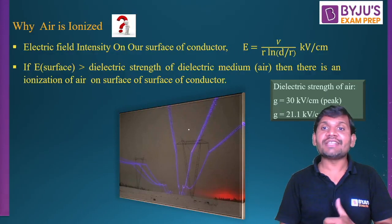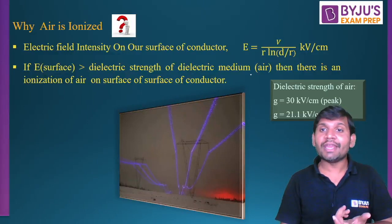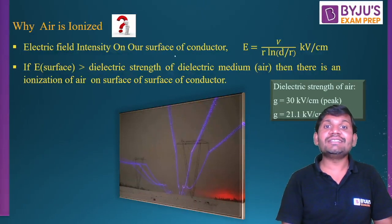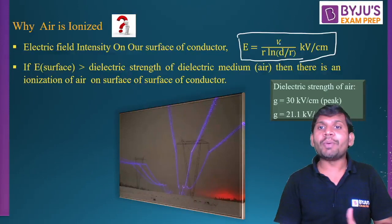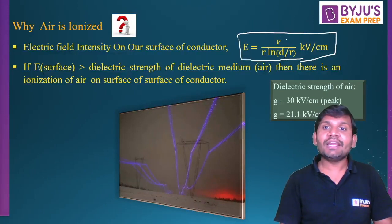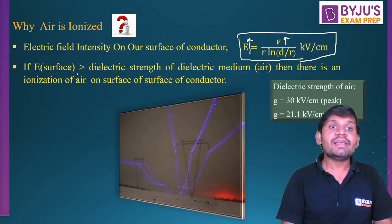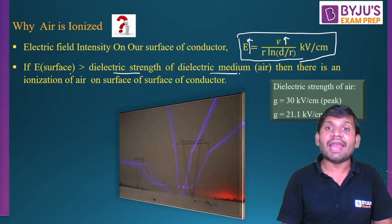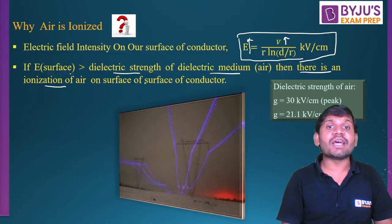Why does ionization of air take place around the conductor? If the lines are operating at high voltages greater than 220 kV, the corona effect is appreciable; for less than 220 kV, it is not appreciable. The electric field intensity on the surface of the conductor is given by a formula where V is the operating voltage and E is the electric field intensity. When the operating voltage increases — that is V greater than 220 kV — the electric field intensity also increases. When the electric field intensity on the surface of the conductor exceeds the dielectric strength of the dielectric medium, which may be air, then there is ionization of air on the surface of the conductor.